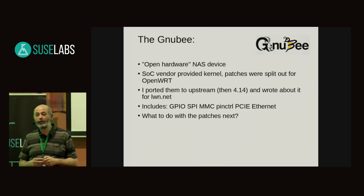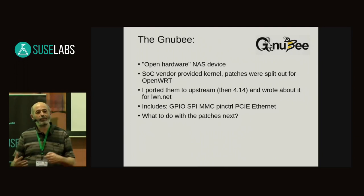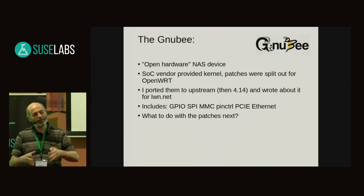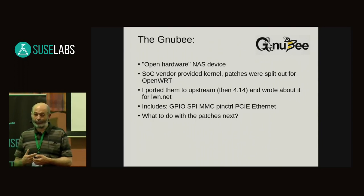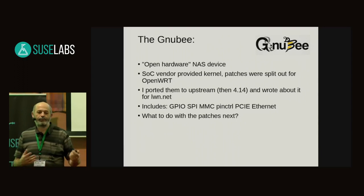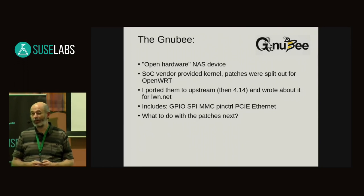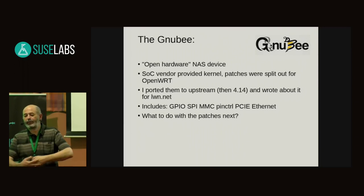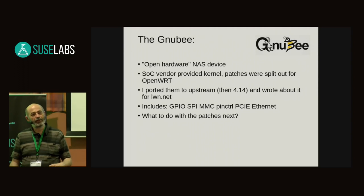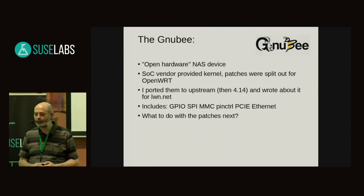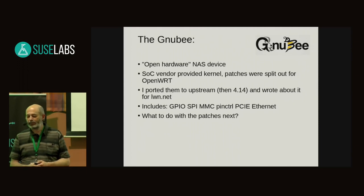Fortunately, well before I came along, some nice people had split out some of this code into individual patches, and they were used in OpenWRT or LibreCMC — one of the little distributions designed for routers and home switches. They were at 4.4 or 4.8, I think. My first involvement was porting them to the then mainline kernel, which was 4.14, and I wrote about it for LinuxWeeklyNews.net, because that's what I like to do. It was a bit of fun.